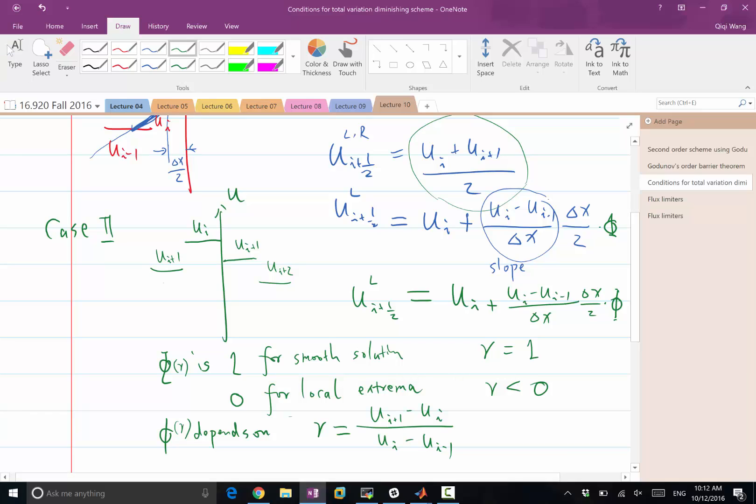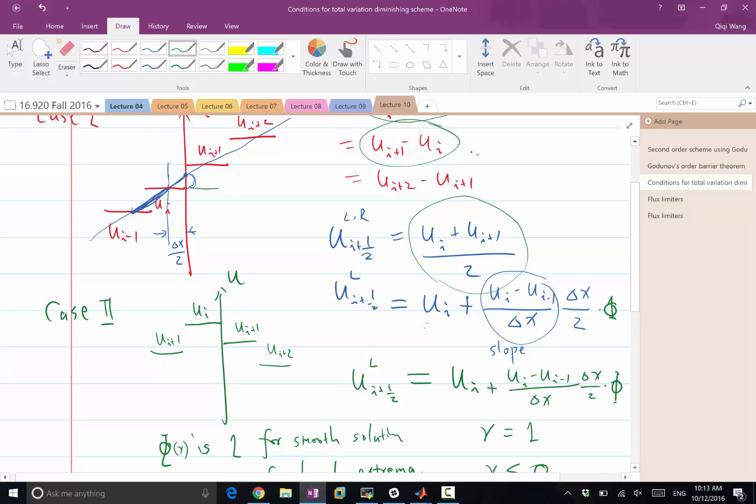Yes. Which one should be ui minus 1 here? The first... Here? Yeah. Here should be ui because this value is ui, right? Let me use this black color here. This value is ui, right? And the distance between ui and this appropriate reconstruction is delta x over 2 times the slope. Right? So this value is ui plus the slope times delta x over 2. Right?